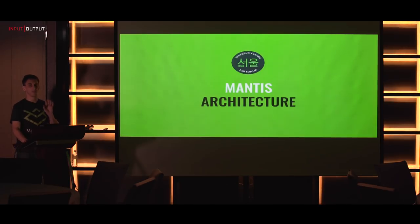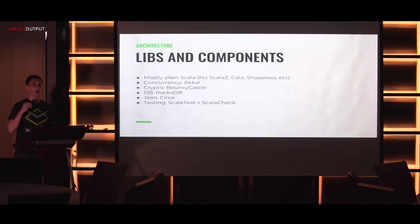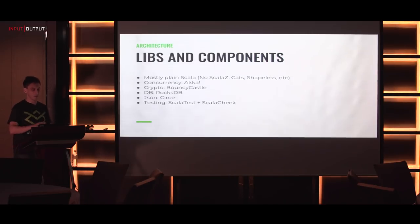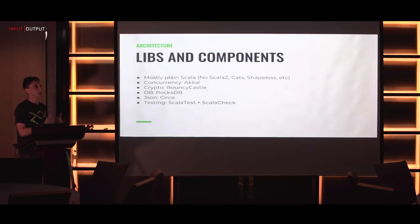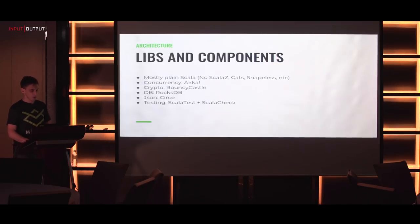Now I'm going to speak about the Mantis architecture, because this is required to understand the hack I'm going to do. One of our goals when coding Mantis was to avoid advanced libraries to not make it too hard for newcomers to approach the code. So we are not using Scalaz, Cats, or Shapeless. Don't get me wrong - Cats is a super awesome library, but it requires you to understand more advanced type system topics. If you want to introduce a new developer it could be more difficult. Scala Cats is actually a port of Haskell libraries into Scala.